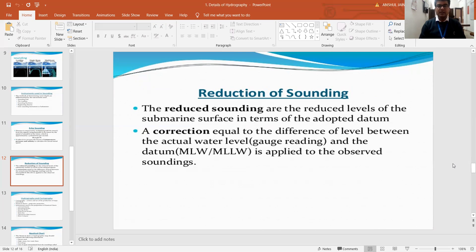We have two different levels: the actual water level gauge reading and the datum, that is MLW considered as mean low water level and mean lower low water level. They are applied to the observed soundings and with respect to that particular datum we find out whether the level is lower or higher.